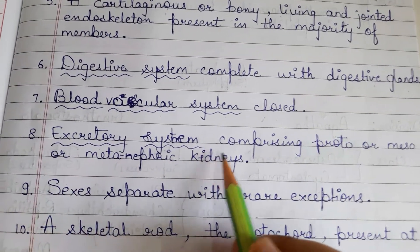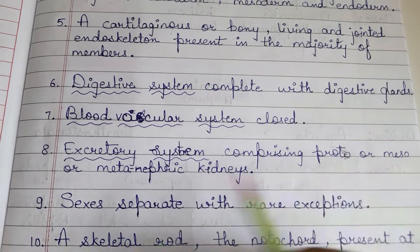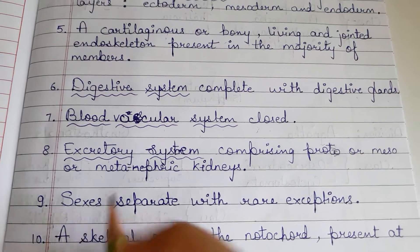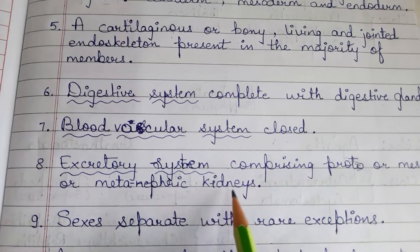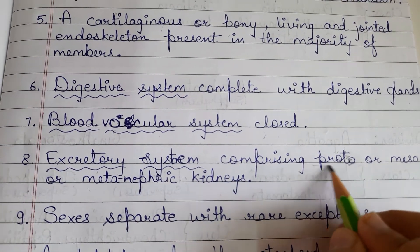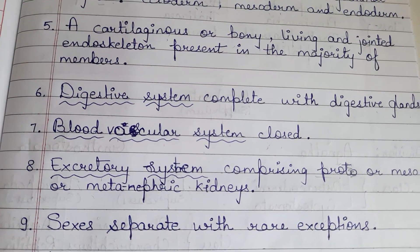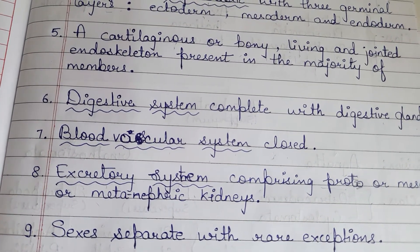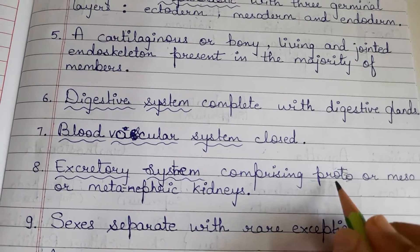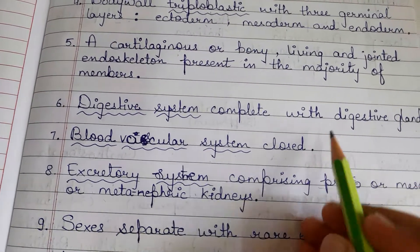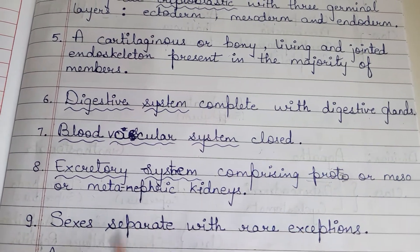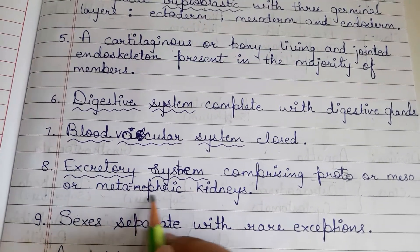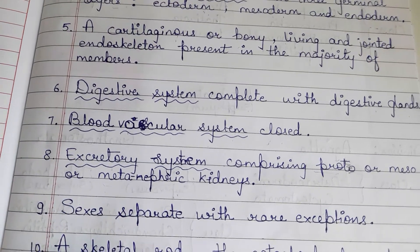Excretory system comprises pronephric, mesonephric or metanephric kidneys. Pronephric kidneys are present in the early larval stage of lower vertebrates like reptiles and amphibia. Mesonephric kidneys are present in the post-larval stage of amphibia and reptiles. And metanephric kidneys are present in higher vertebrates — in humans and other mammals.